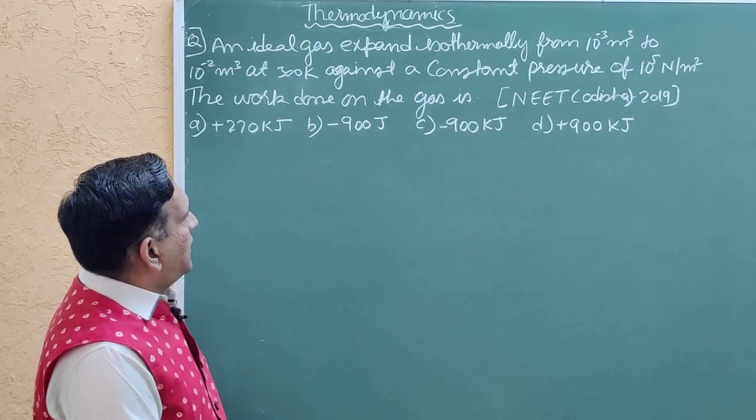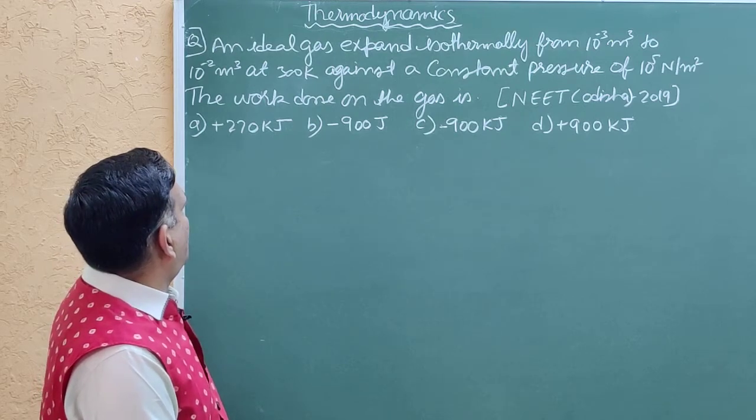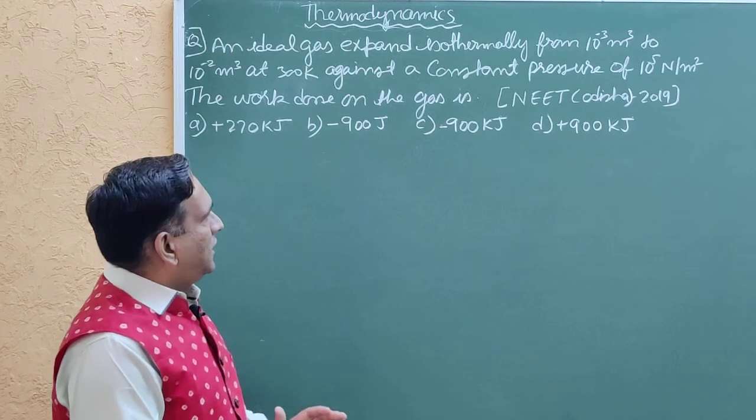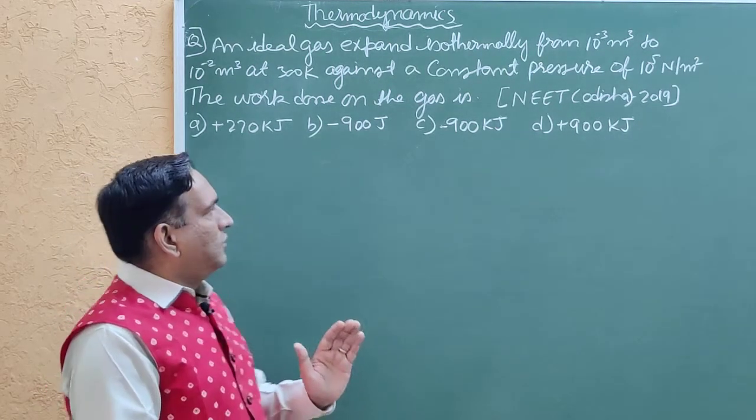An ideal gas expands isothermally from 10^-3 meter cube to 10^-2 meter cube at 300 Kelvin against a constant pressure of 10^5 Newton per meter square. The work done on the gas.